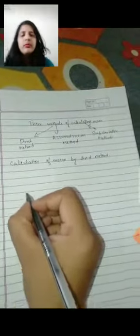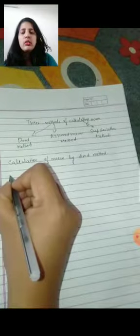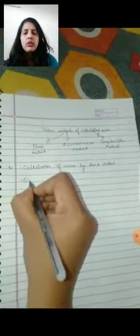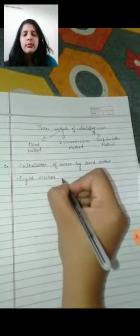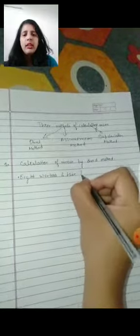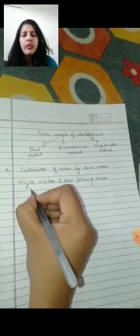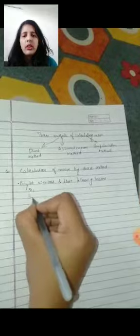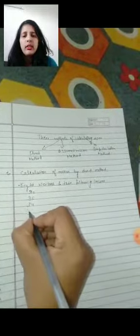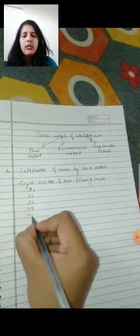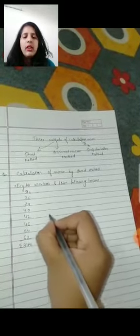Firstly we will calculate mean by direct method. So here are the eight workers and their income: 30, 36, 34, 40, 42, 46, 54, and 62. This is the income of workers and the total of their income is 344.